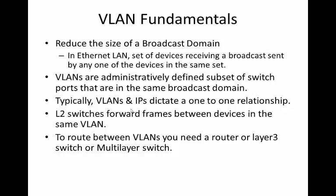Layer 2 switches by default will forward frames between devices in the same VLAN. If you have two devices in VLAN 10 — say a laptop and a printer — the switch looks at the MAC address table and forwards traffic directly to the printer without it going all the way up to the router. Versus if the laptop and printer were in two different VLANs, that traffic would go all the way to the router, and depending on the firewall policy, that traffic would then be routed.